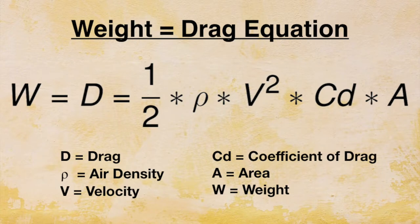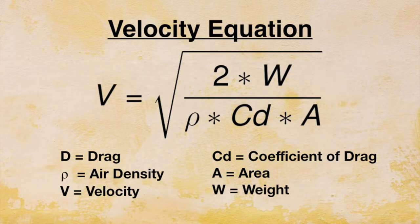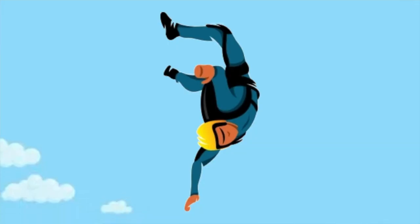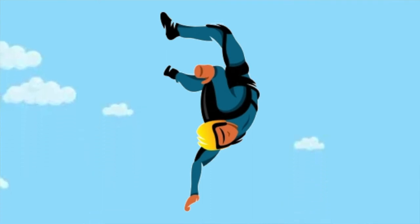We can calculate an object's terminal velocity if we set weight equal to drag and rearrange the formula. Weight equals drag equals one half times air density times velocity squared times drag coefficient times area. Therefore, velocity equals the square root of two times weight over the air density times drag coefficient times area. Let's plug in some numbers for the example of a skydiver flying head first without a parachute and see what terminal velocity we calculate.